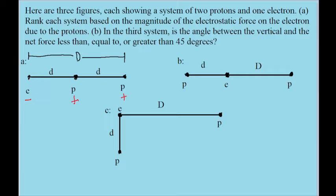In system A, the electron is on the left, so let's focus on the forces acting on it. The electron is going to experience two forces, one for each proton. Since the electron and the proton have opposite charges, the electron is going to experience a force towards the right, towards the proton, because they are attracting one another. It is also experiencing another force to the right because of the other proton farther away. Both protons are to the right of the electron, so both forces are directed to the right.